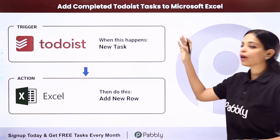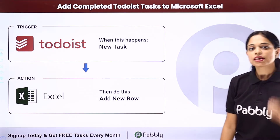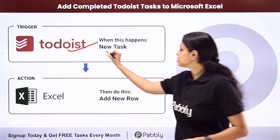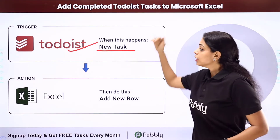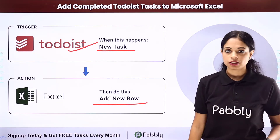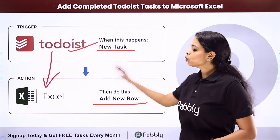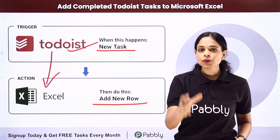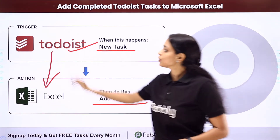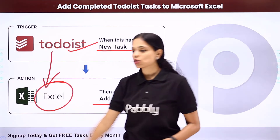In this video, we are going to see how to add completed Todoist tasks to Microsoft Excel. Let's say you are using Todoist as a task manager and you want that every time a task is completed, it should be added as a new row in your Excel spreadsheet. For this, you will have to integrate these two applications using Pabbly Connect, where this entire process will get automated. Your trigger application would be Todoist and your action application would be Microsoft Excel.